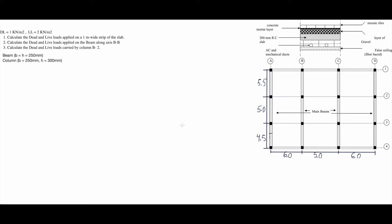We have assumed this section of a slab. I'm going to show you only for one floor, just to get the idea of how to do it. This is the slab section. We have concrete, mortar concrete, tiles, gravel, full ceiling, and AC ducts.